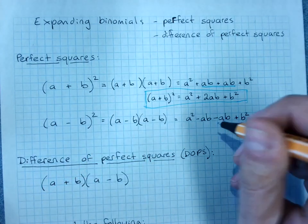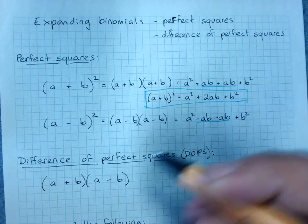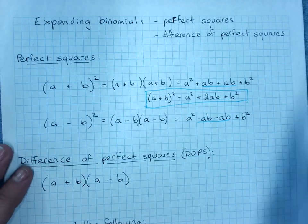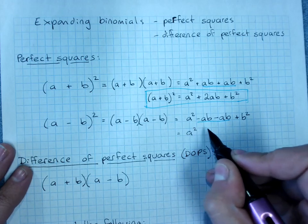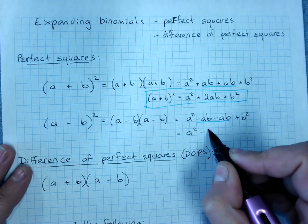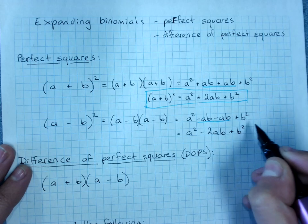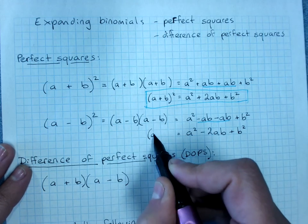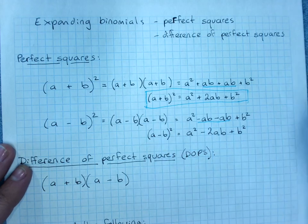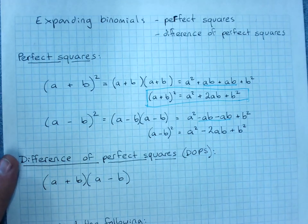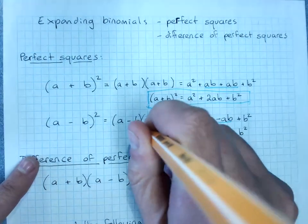So I still get the two identical terms in the middle. So it's still a², but it's minus 2ab plus b². So if you have a perfect square that has a negative term, then this is your rule.